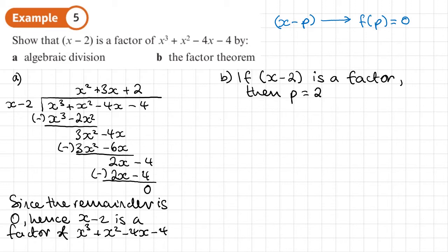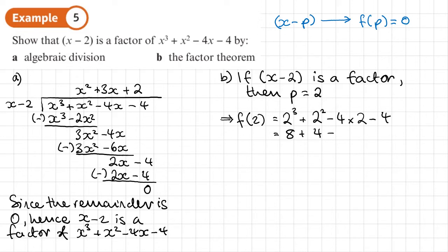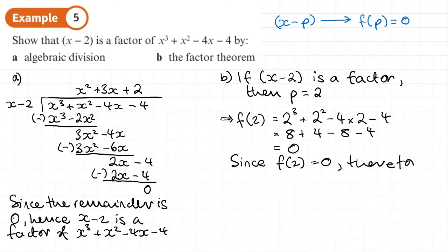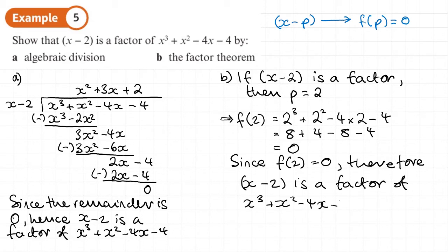All we need to do is substitute 2 in for x. So we work out f of 2: 2 cubed plus 2 squared minus 4 times 2 minus 4. 2 cubed is 8, 2 squared is 4, then we take away 8 and take away 4. That's 0 because 8 minus 8 and 4 minus 4 both give 0. Since f of 2 equals 0, therefore x minus 2 is a factor. You can see which way is quicker — I would always go for the factor theorem over long division.